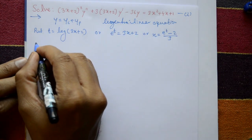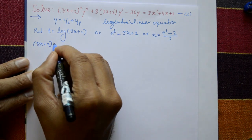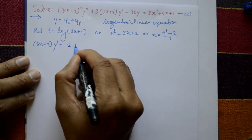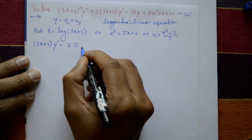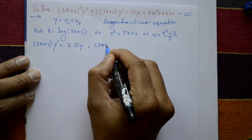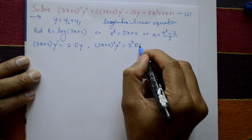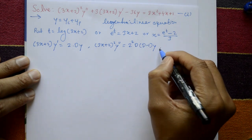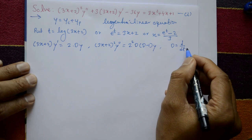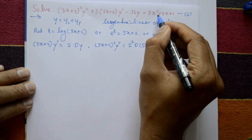For the Legendre Linear Equation, the standard results are: (3x + 2)y' = a·Dy, where a = 3, and (3x + 2)²y'' = a²·D(D-1)y = 9D(D-1)y. Here D is the differential operator d/dt with respect to t. Now substitute these results into equation number 1.